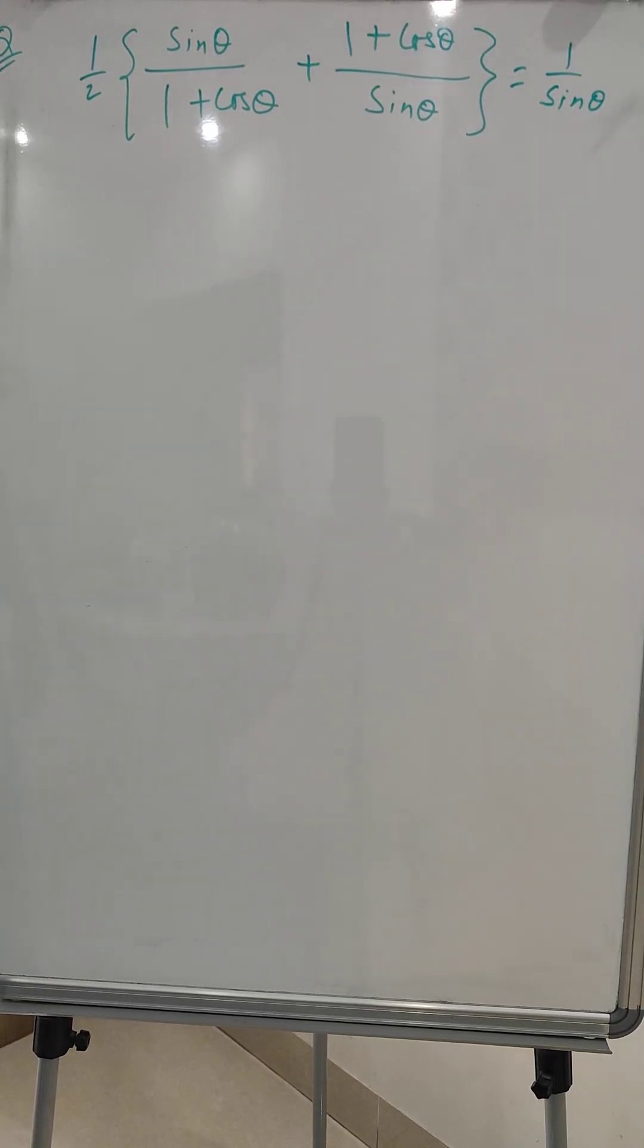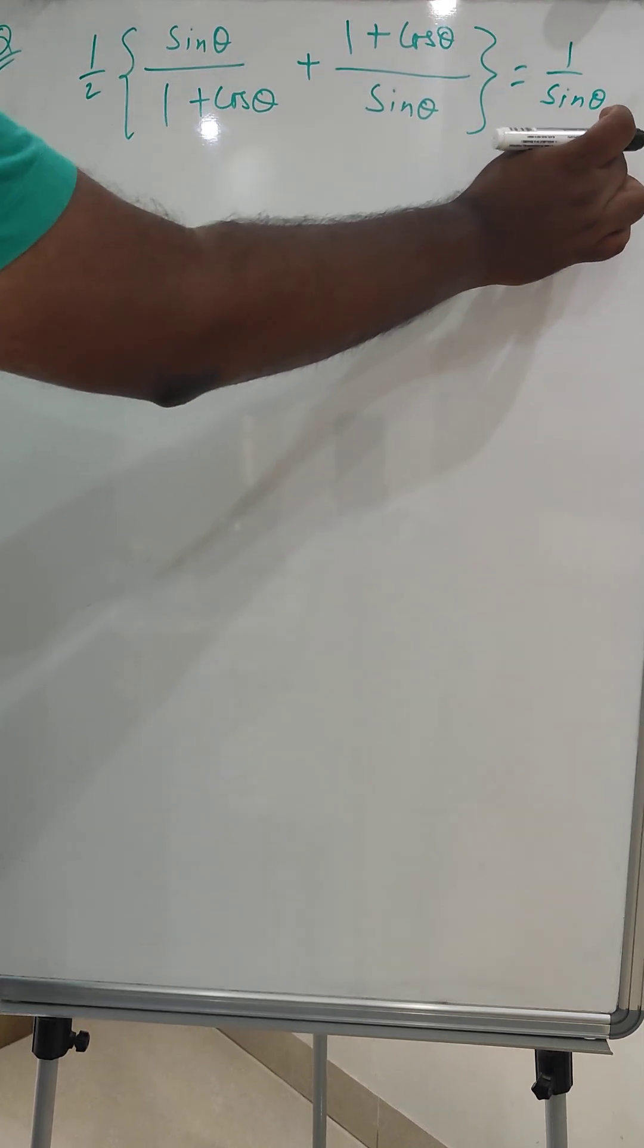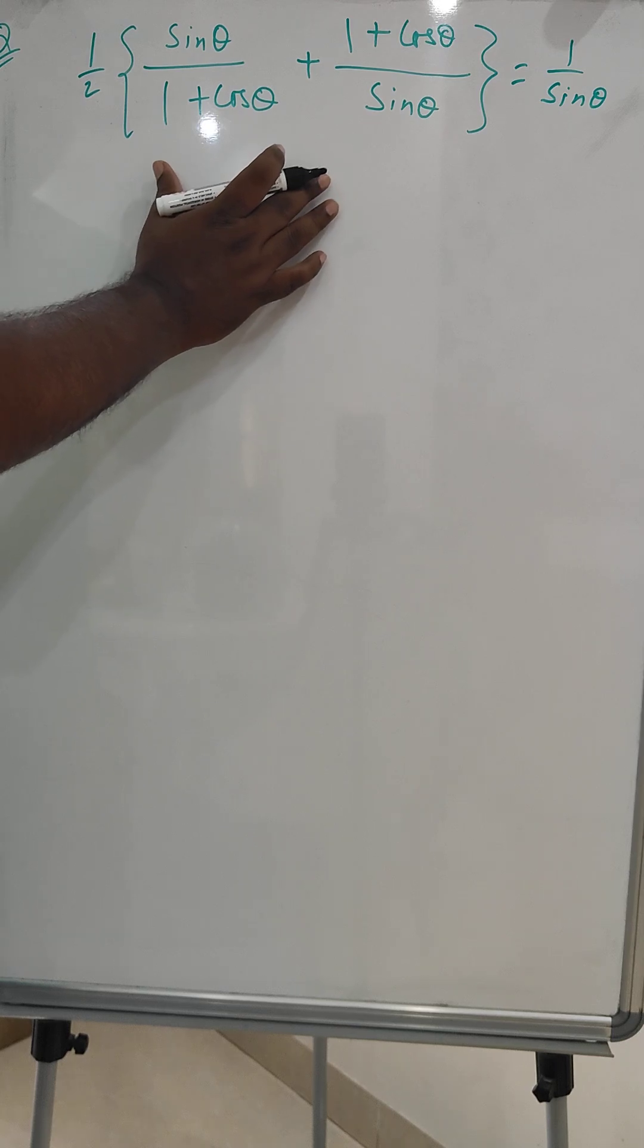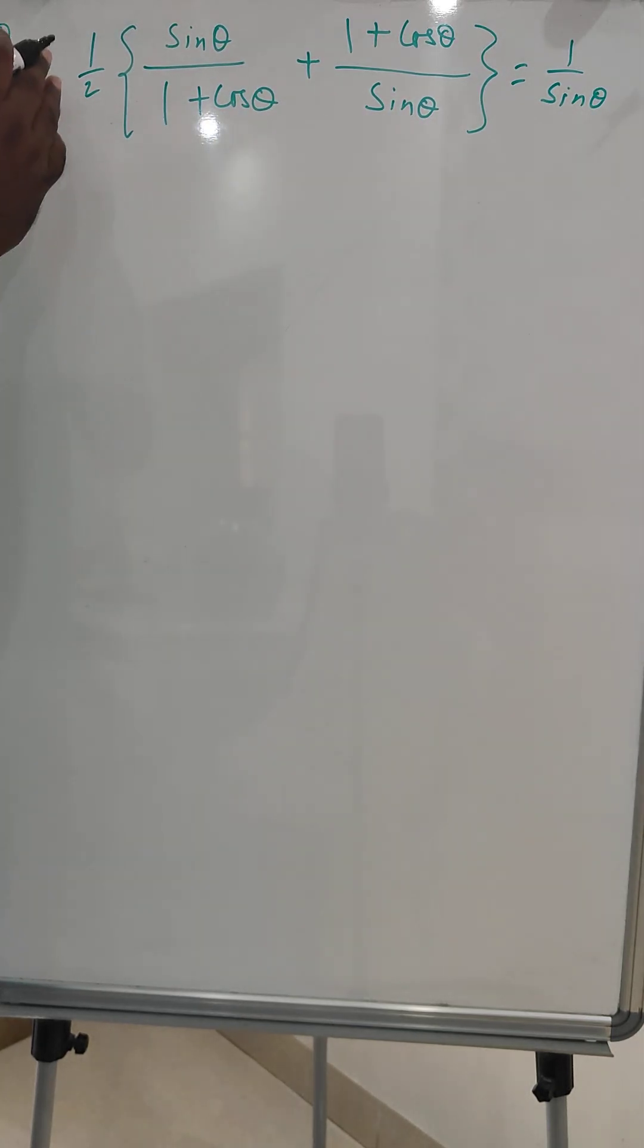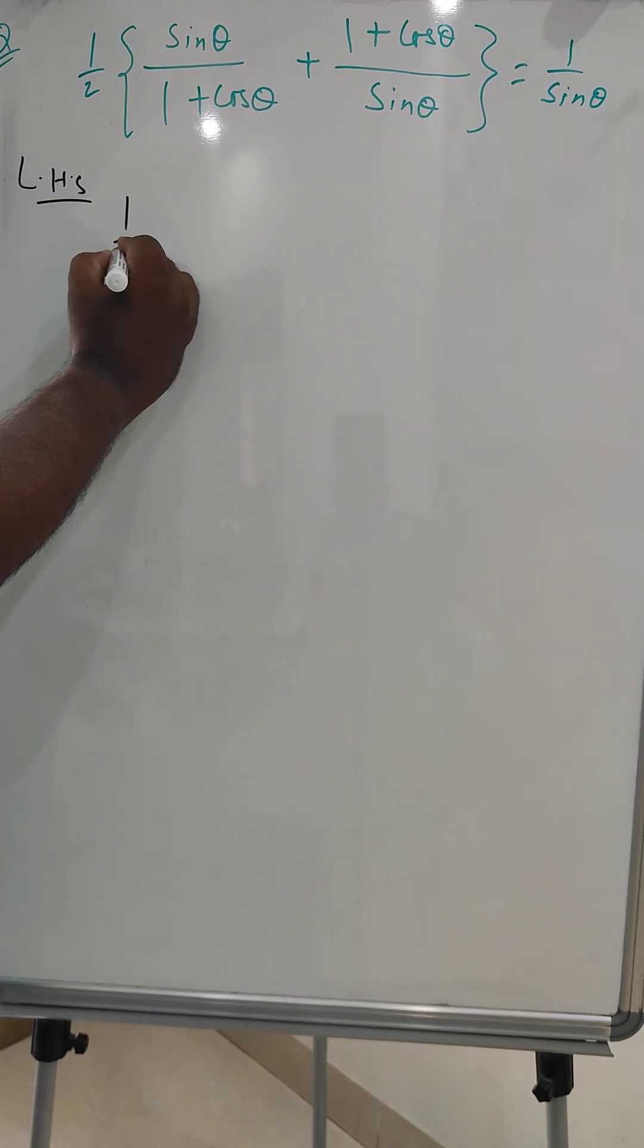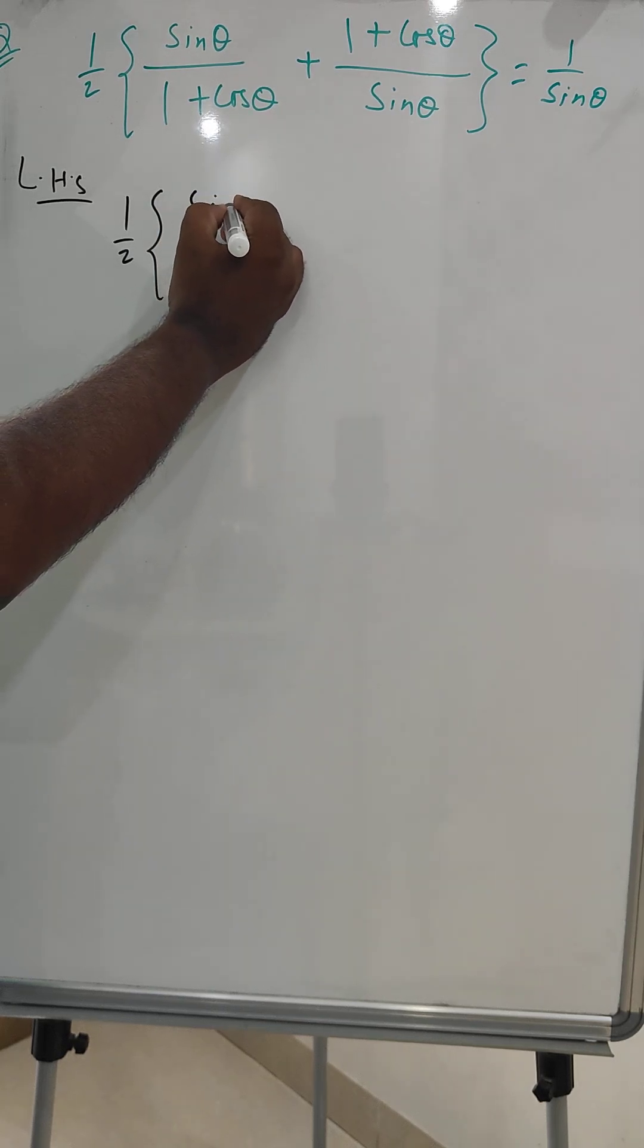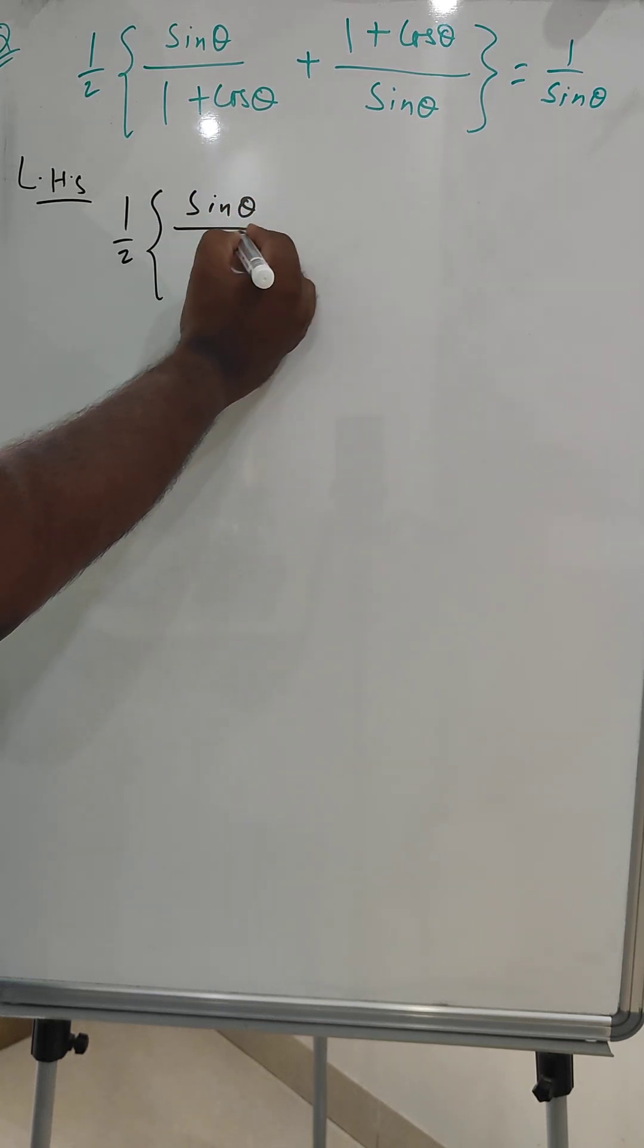Hi everyone, so today we have a trigonometric problem where we have to prove LHS equals RHS. The LHS is 1/2 times [sine theta over (1 + cos theta) plus (1 + cos theta) over sine theta].